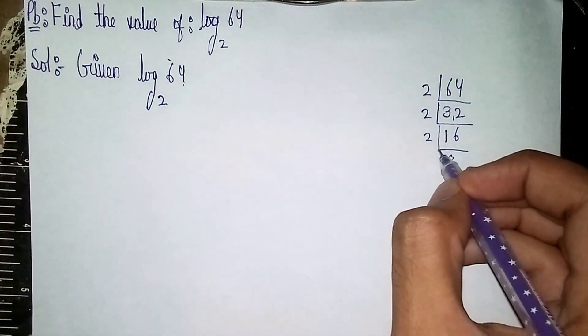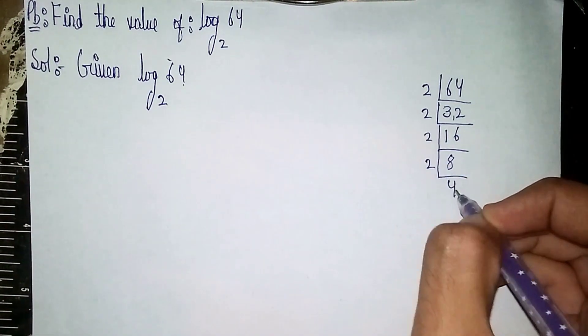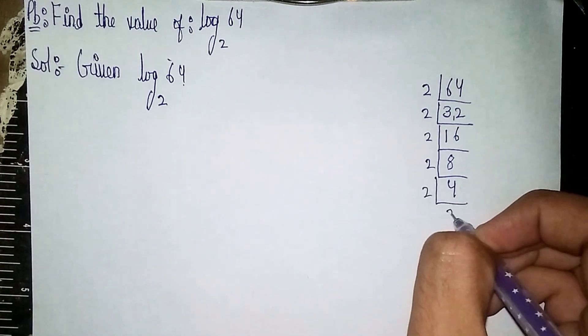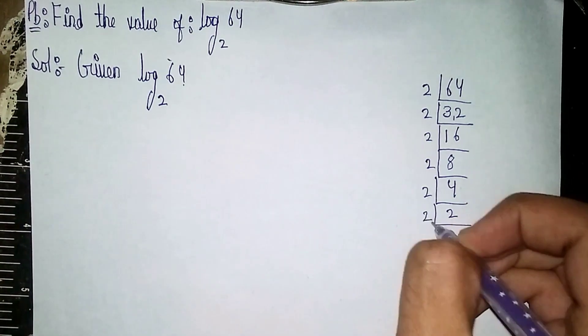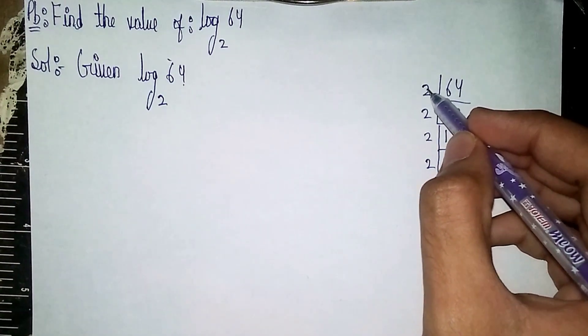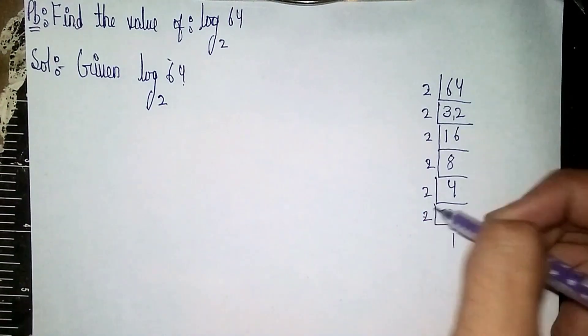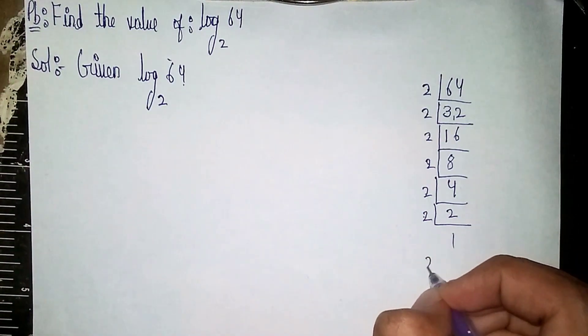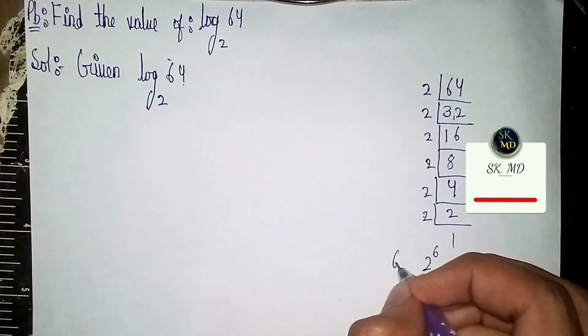So how many times 2 is: 1, 2, 3, 4, 5, 6. So it becomes 2 power 6. So 64 is equal to 2 power 6.